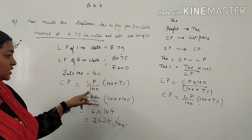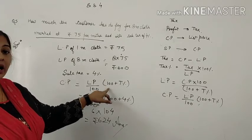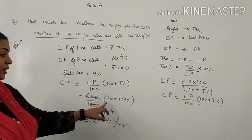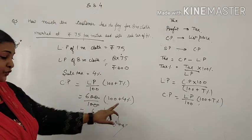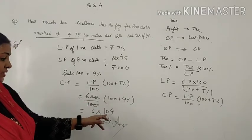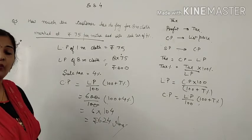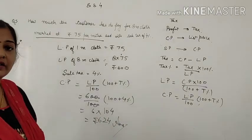Cost price will be list price by 100 into 100 plus tax percent. It will be 600 by 100 into 100 plus 4 percent, which equals 6 into 104, which is equal to Rs. 624. That solves our problem.